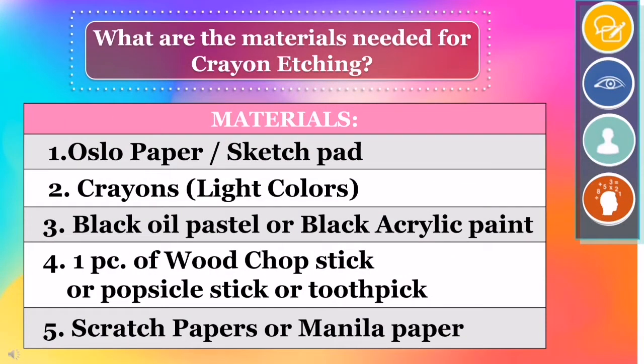What are the materials needed for crayon etching? You will need: number one, Oslo paper or sketch pad; number two, crayons, preferably light colors; number three, black oil pastel or black acrylic paint; number four, one piece of wood chopstick, or popsicle stick, or toothpick; and number five, scratch papers or manila papers.